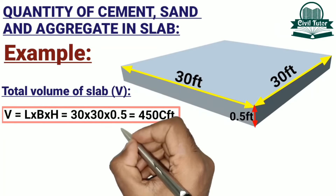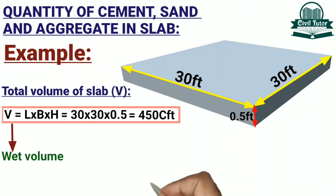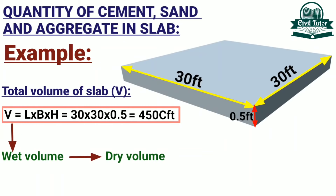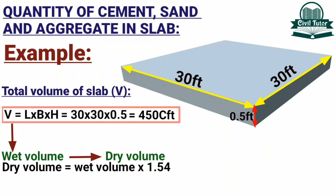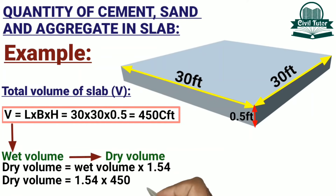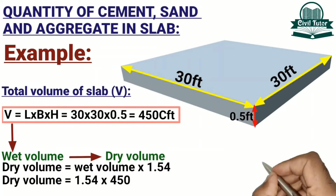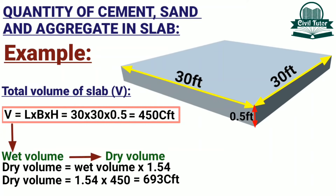It should be noted that this total volume is the wet volume of the slab. We need to convert this wet volume to dry volume. Dry volume equals wet volume multiplied by 1.54, where 1.54 is a constant value that will be discussed in a coming tutorial. So dry volume equals 1.54 × 450, giving a dry volume of 693 cubic feet.